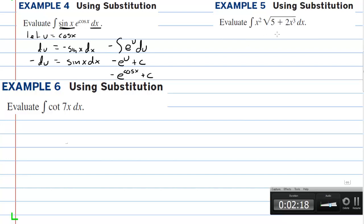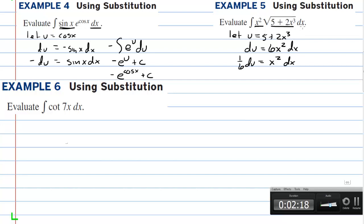In example 5, we're going to use substitution again, and we always look for a function to be u. Let u equal as much as we can — I want it to be the function so that when we take the derivative, the derivative of x to the third is x squared, but we'll have a constant we can deal with. So we're going to let u equal 5 plus 2x to the third. The derivative of 5 is 0, and the derivative is going to be 6x squared. We have an x squared but not 6x squared, so 1 sixth du equals x squared dx.